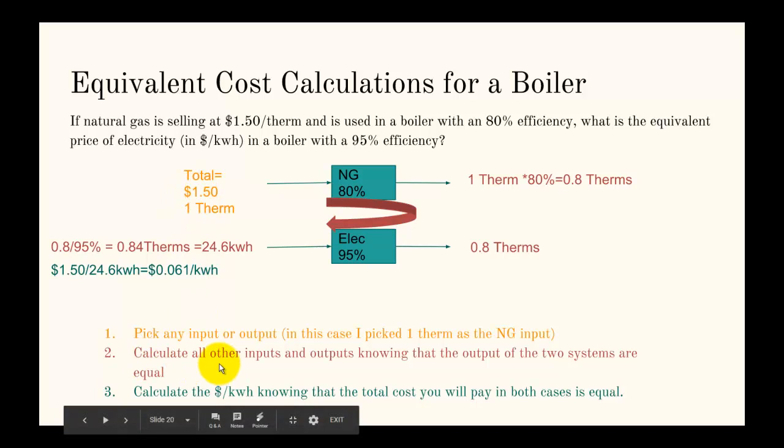In this case, I picked one therm as the natural gas input because that's an easy unit to do, because then I know I spend a total of $1.50 here. That's the price information I know. Then the second step is to calculate all other inputs and outputs knowing that the output of the two systems are equal. So let's see how that works.